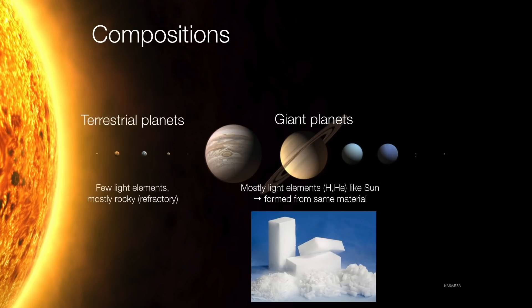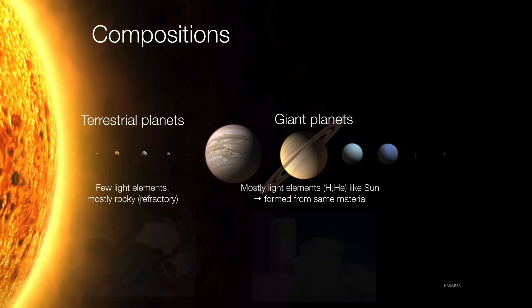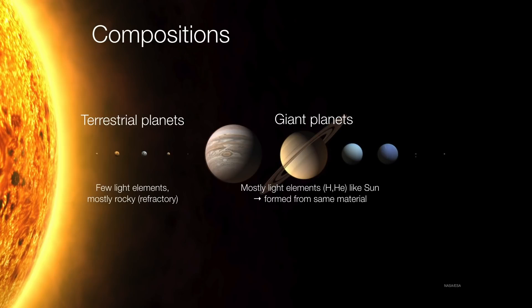But terrestrial planets have relatively few of these lightweight elements. They're mostly composed of rocky or refractory materials - minerals, olivines, and so forth. Why then are these two types of planets so very different from one another in terms of their composition?